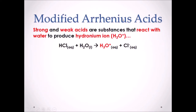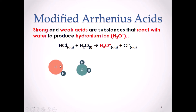The modified Arrhenius theory states that all acids — strong and weak — are substances that react with water to produce the hydronium ion. In our example, HCl is a strong acid that now reacts with water to produce H3O+ and Cl−. What is happening is that the hydrogen atom on HCl is being lost and given to H2O.